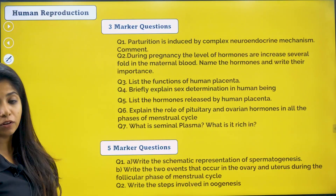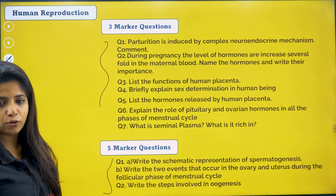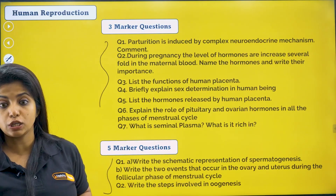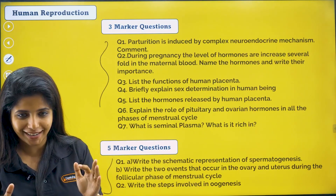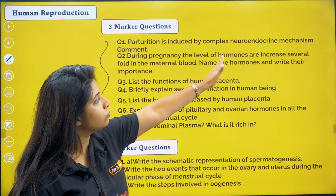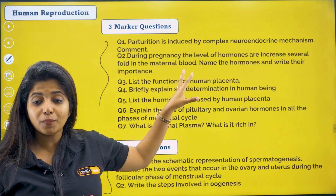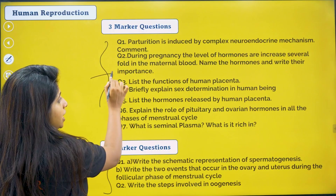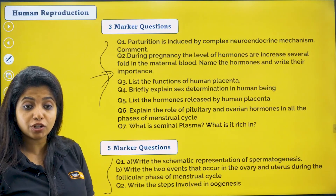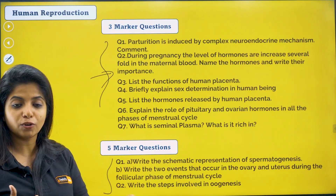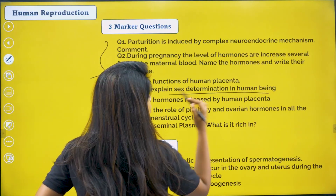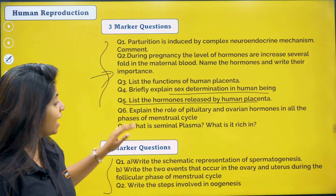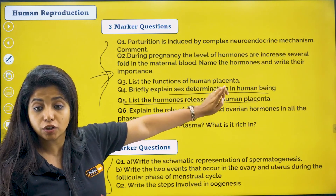Going ahead to the next chapter: human reproduction. Two-marker question: parturition is induced by a complex neuroendocrine mechanism, meaning both the nervous and endocrine systems are involved — explain that. During pregnancy, the levels of hormones like thyroxine and cortisol are increased several fold in the maternal blood. List the functions of the human placenta apart from hormone secretion — they include oxygen and CO2 transport. Briefly explain sex determination in human beings. List the four hormones released by the human placenta.